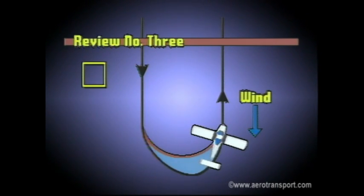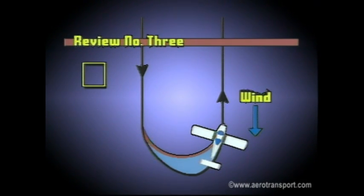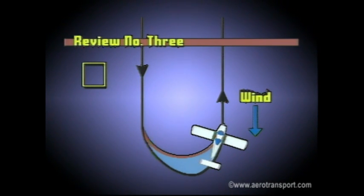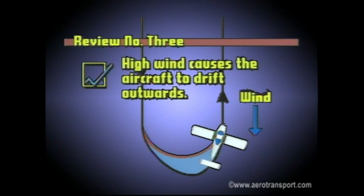Final question: When turning from downwind into the wind, why does the actual path of flight not follow the still-air flight path? The high wind causes the aircraft to drift outwards.